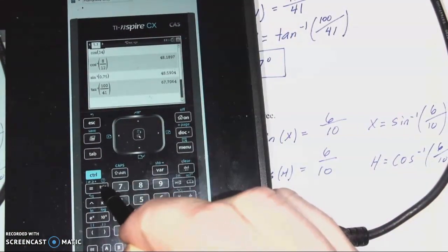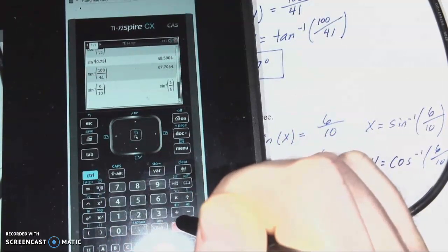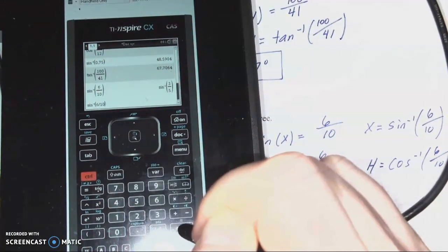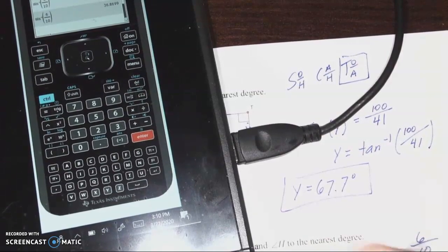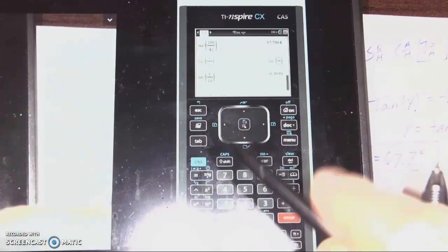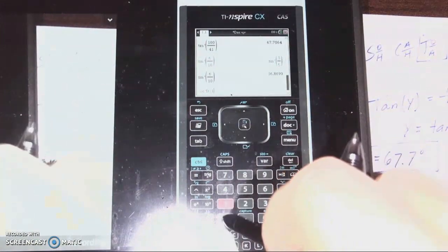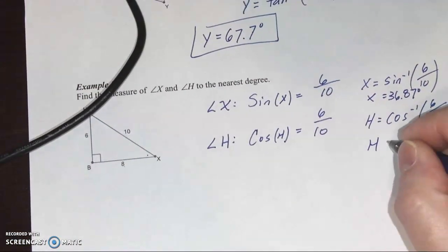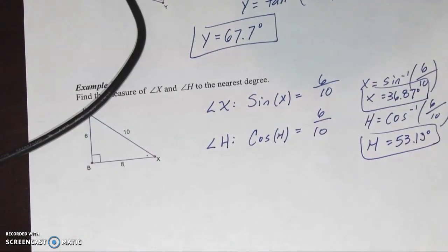So we'll do sine inverse and cosine inverse. So we got sine inverse of 6 over 10. I did not hit control, enter. Sine inverse of 6 over 10. Control, enter. You get 36.87 degrees. And then cosine inverse of 6 over 10. 53.13 degrees. These actually do add up to 90. Nice way to check it for us.